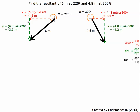To find the y-components, we use the sine function. Six meters times sine of 220 gives us negative 3.9 — the negative means it's going down or south. And over here we've got negative 4.2, so again, going down.